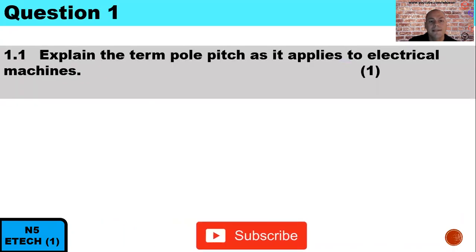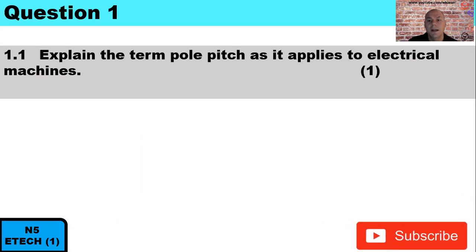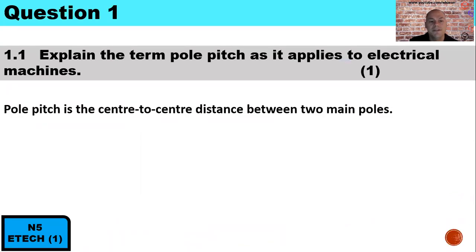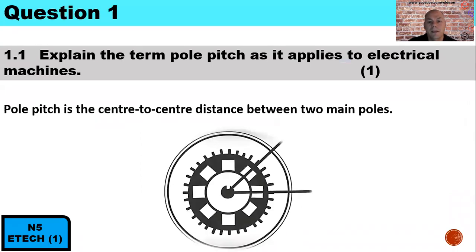Question 1.1: Explain the term Pole Pitch as it applies to electrical machines. Pole Pitch is the center-to-center distance between the two main poles. In our illustration we have an eight-pole machine, which means there are four pairs. If we take an imaginary line through one main pole and another through the second main pole, the distance between them is the Pole Pitch.